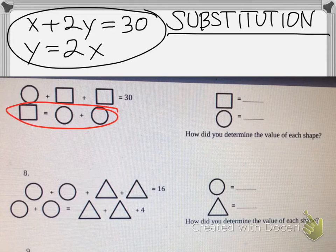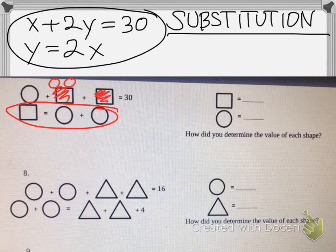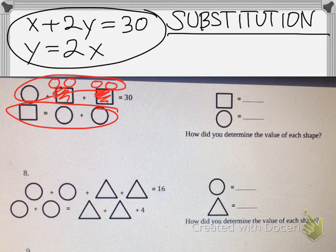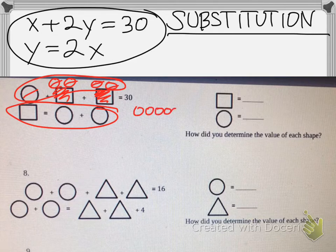So pretty much you can just come up here and eliminate this square and replace it with two circles. Eliminate this square and replace it with two circles. And pretty much now you can see that you have five circles equals thirty.